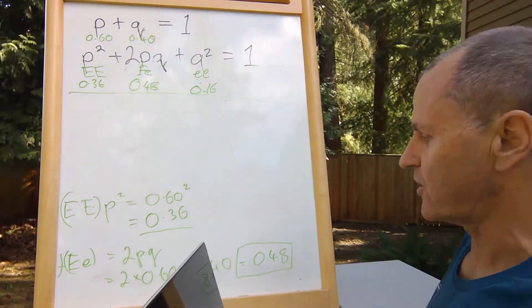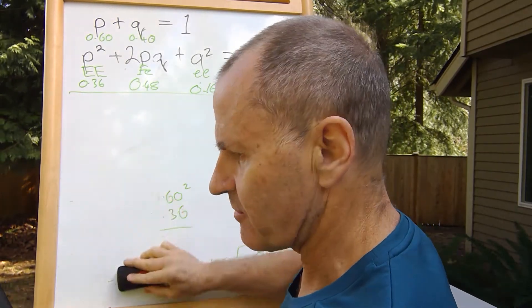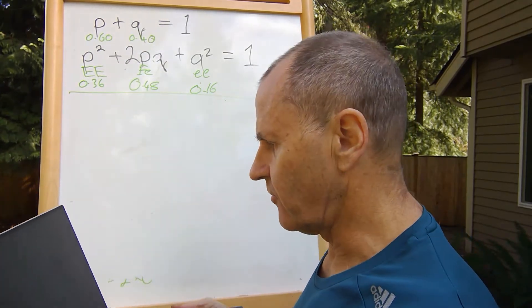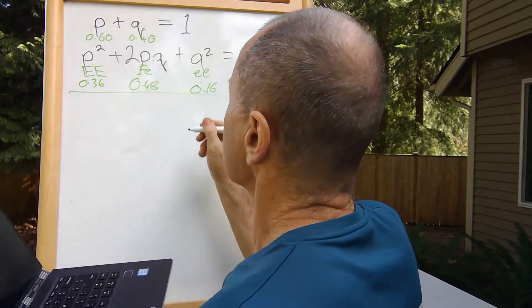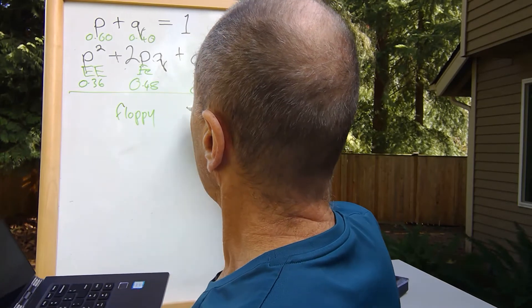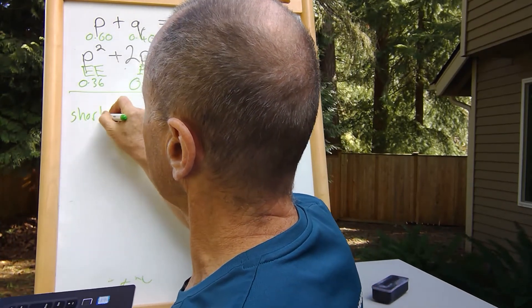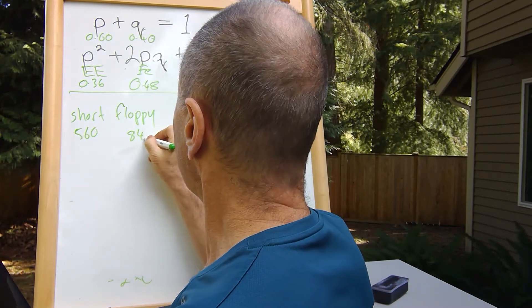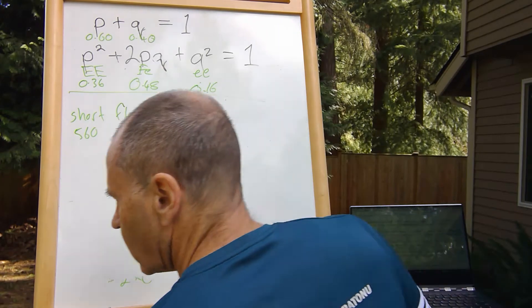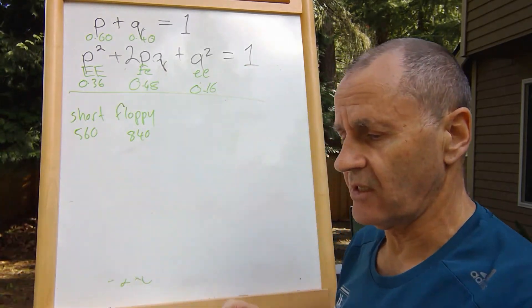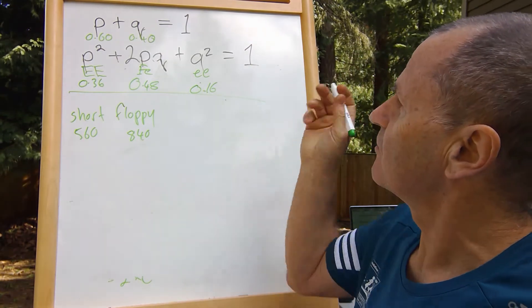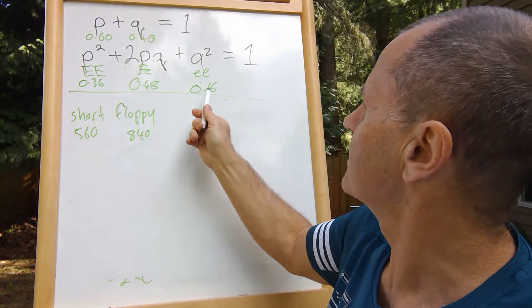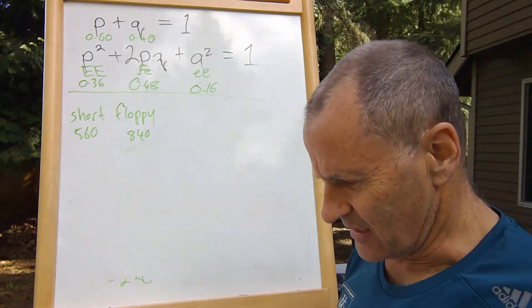The next generation of rabbits has 560 individuals with short ears and 840 individuals with floppy ears. We can immediately see that there's a lot more floppy-eared ones than short ears, which is not the case at the beginning where we had many more with short ears and only 16 percent with floppy ears. So this has changed.